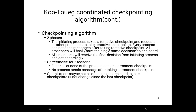In phase two, Pi propagates its final decision to all processes. On receiving the message from Pi, all processes act accordingly. The correctness of this checkpointing algorithm is: number one, either all or none of the processes take a permanent checkpoint; number two, no process sends a message after taking a permanent checkpoint.